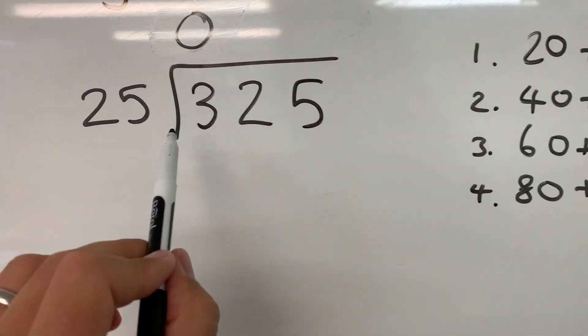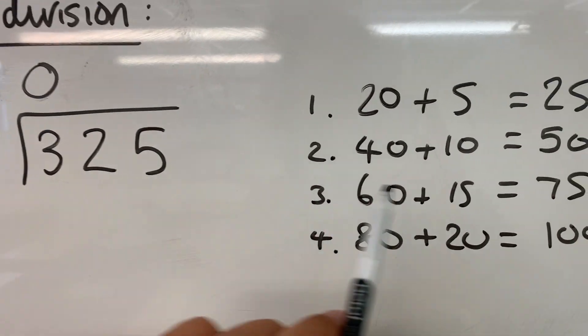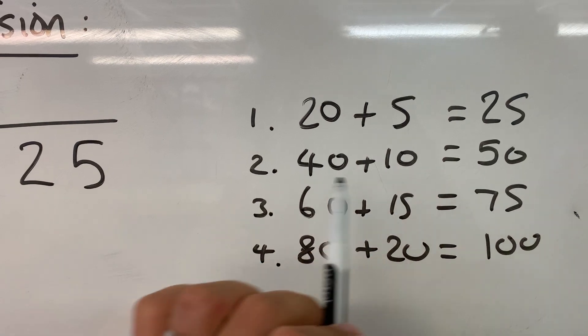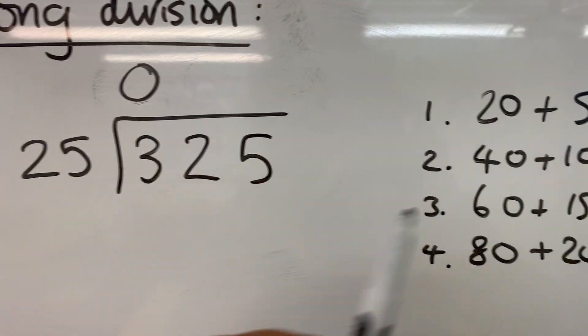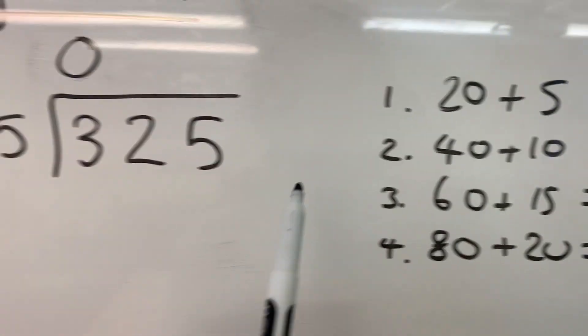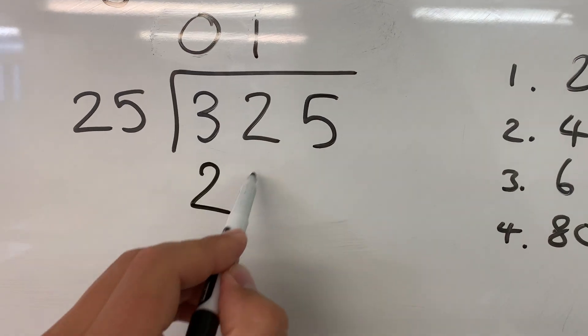Okay, so I look at 32. How many times does 25 go into 32? Well, we have 25, that's once. Twice would be too many, so we've got one there. And the answer to that is 25. So how many times does 25 go into 32? It's once, and the answer is 25.